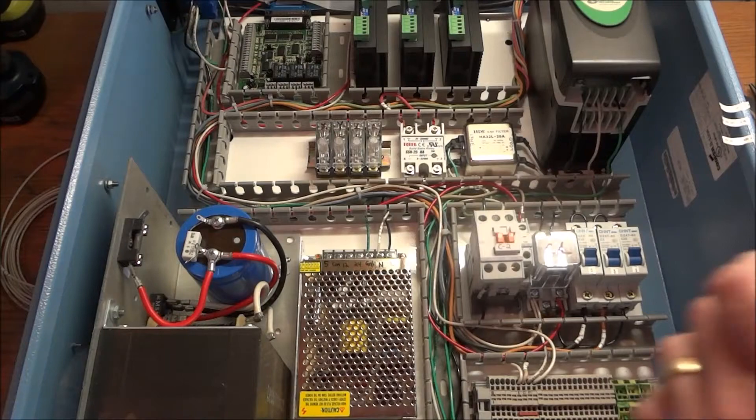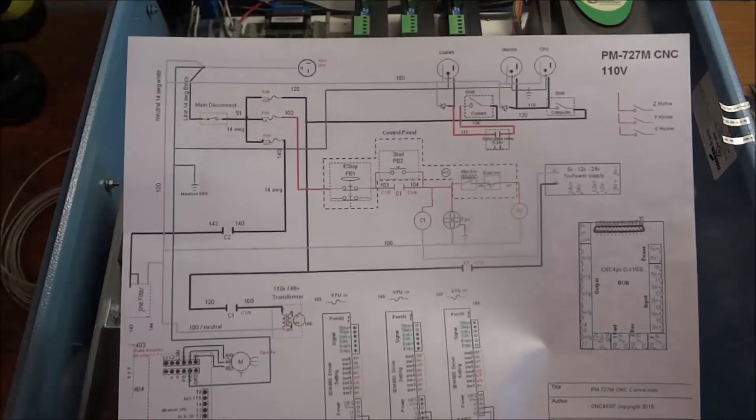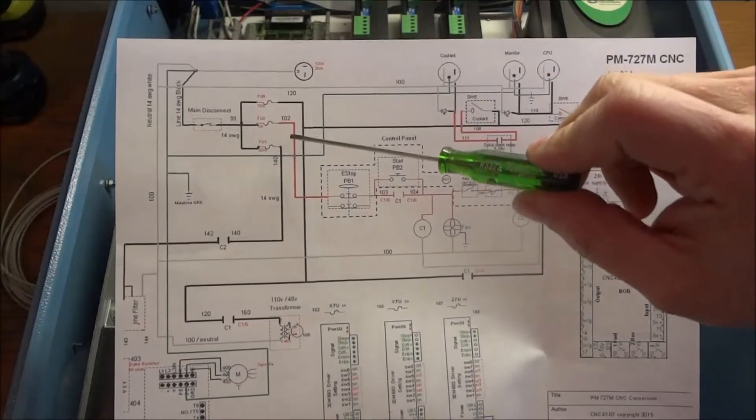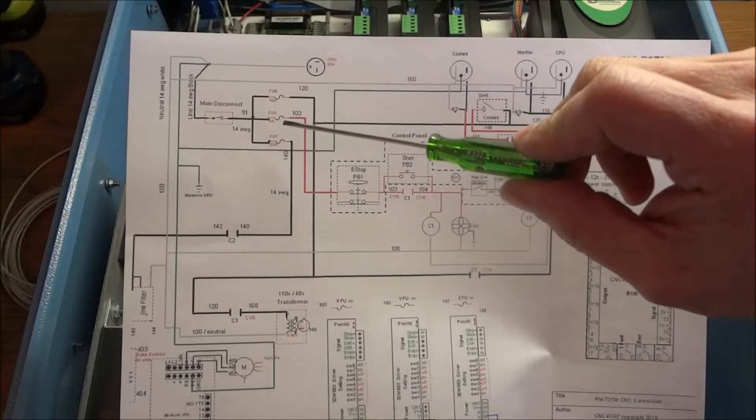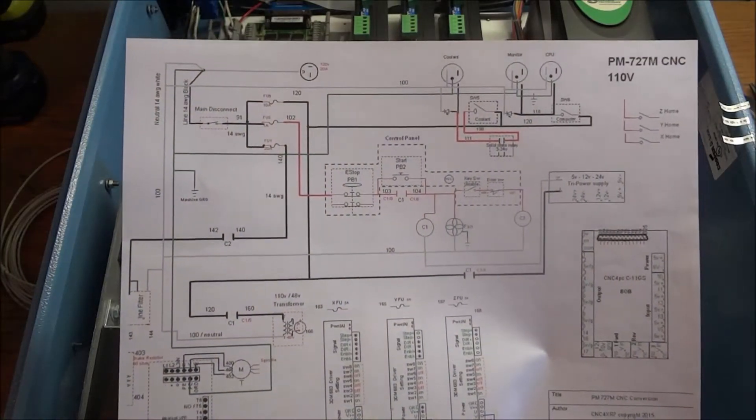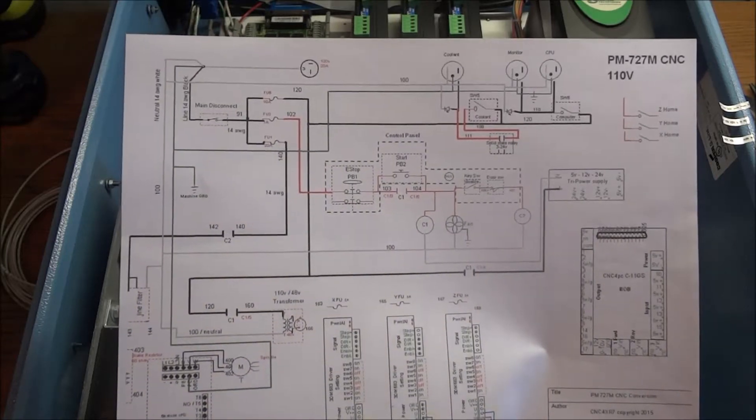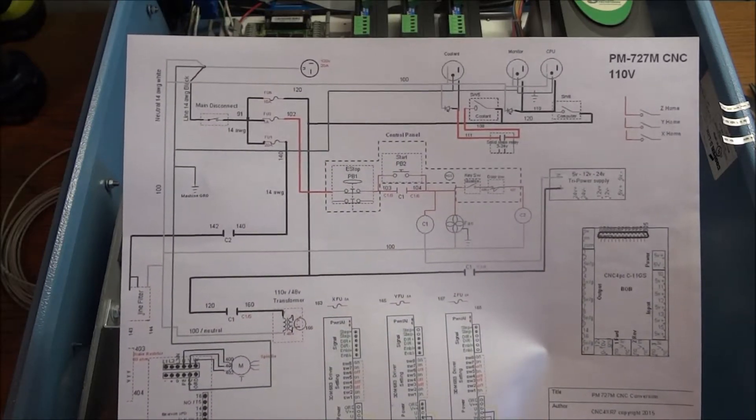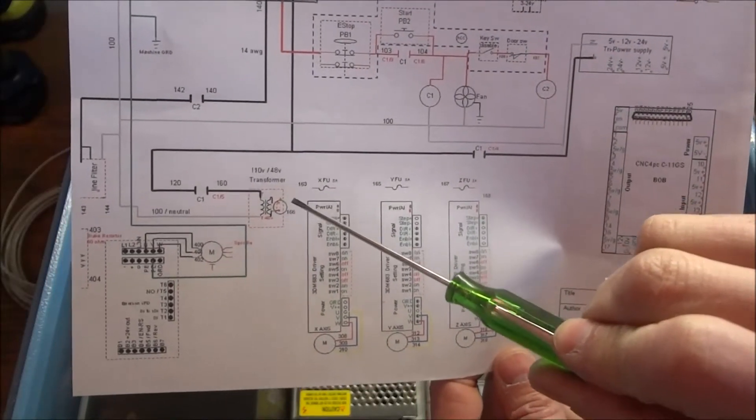In the last video we finished up wiring our 110 volt circuits from our three main fuses. We also switched out the fuses with circuit breakers for those of you wanting to do that. So now continuing on, today we're going to concentrate on wiring up our 48 volt power supply.